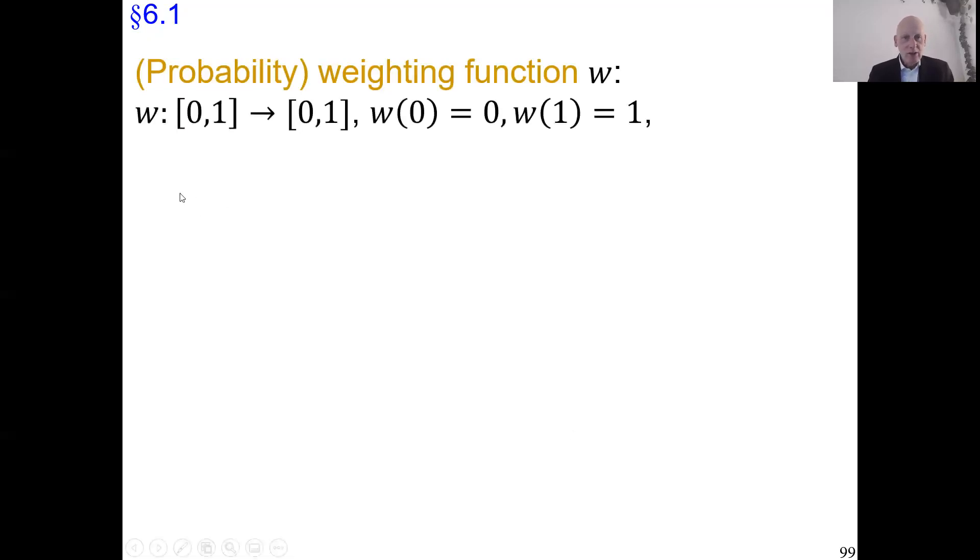The first definition I want to show you is the definition of probability-weighting function. That's a function w from the [0,1] interval to the [0,1] interval. w(0) equals 0, w(1) is 1, this is a normalization we always do. w is strictly increasing, so the bigger the probability, the bigger the decision-weight. We do not require w to be continuous because there's interest, especially at extreme probabilities, to allow for discontinuities there.